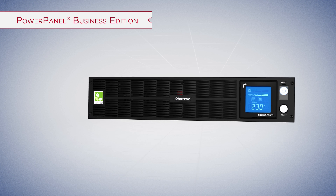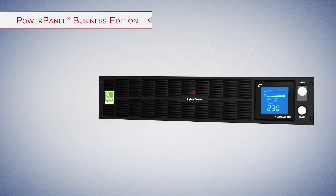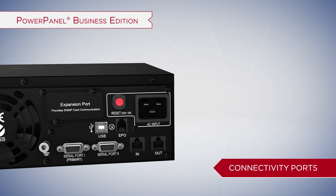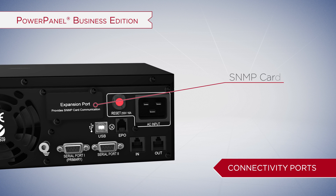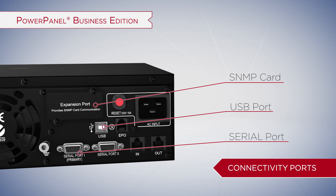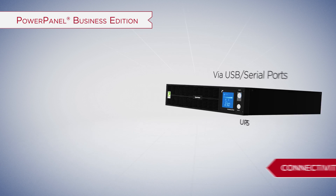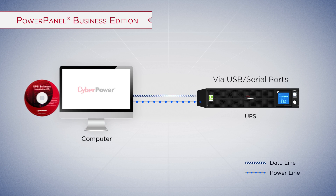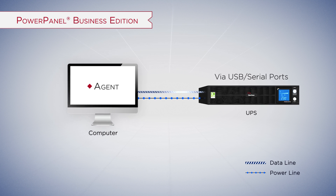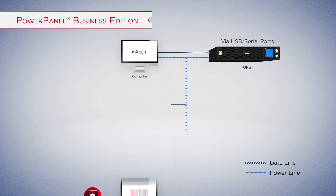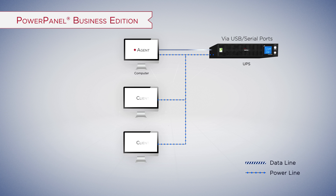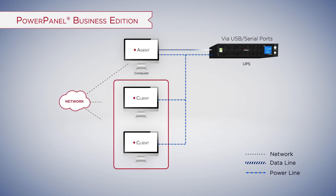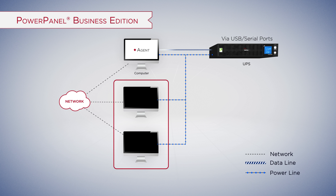To enhance the capability of power management, the Business Edition supports networking management using a dedicated SNMP card, USB, or serial port. UPS management via USB or serial port requires a standby computer installed with Agent. Other computers powered by the UPS should be installed with Client, which can be informed by Agent via the network connection to perform system graceful shutdown.